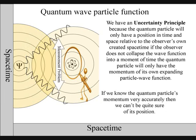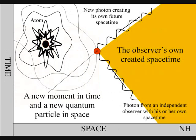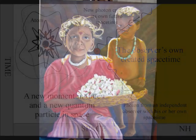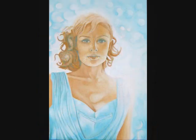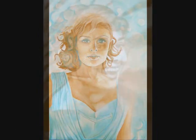This is because to observe the quantum particle, we create a photon-electron coupling, collapsing the wave particle function into a moment of time and space that is part of the observer's own created space-time. At a fundamental quantum level, the observer is the observed, within his or her own created space-time.